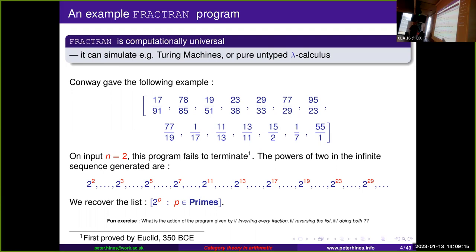The reason it fails to terminate when the input is two — this was proved even before FRACTRAN was written down. If you look at the sequence of natural numbers this takes on, and specifically the powers of two in this list, what you arrive at are the powers of two to the primes: 2², 2³, 2⁵, etc. There are actually videos of Conway doing this online; it's quite impressive the way he writes this down from memory.